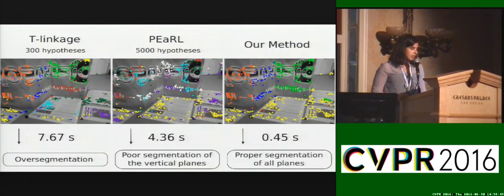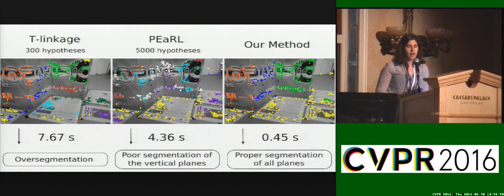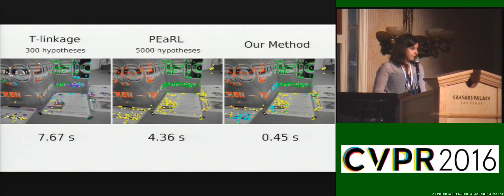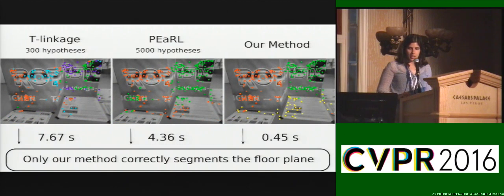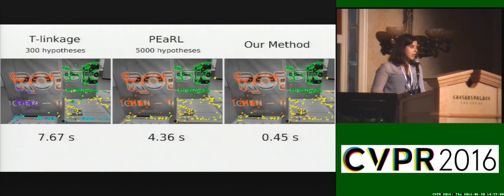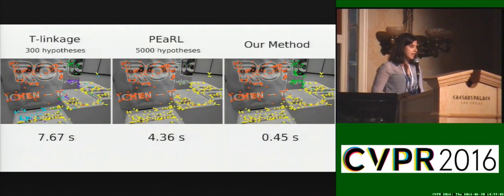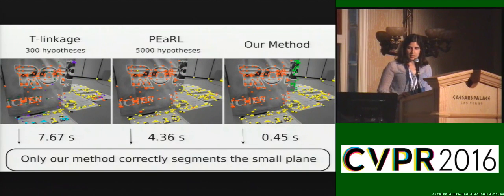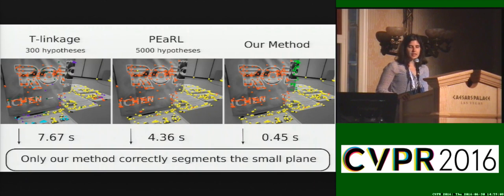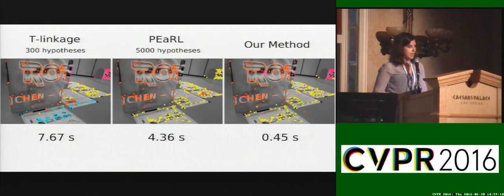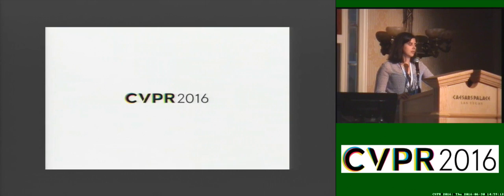In the next case, D-linkage seems to correctly segment the four scene planes but tends to over-segment, which is undesirable. In this example, it can be seen that there is image blur, and still our method is able to correctly segment the scene planes. The last example shows that our method is the only one that is able to segment the small, faraway plane, providing a better segmentation.